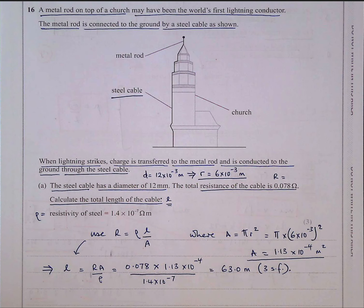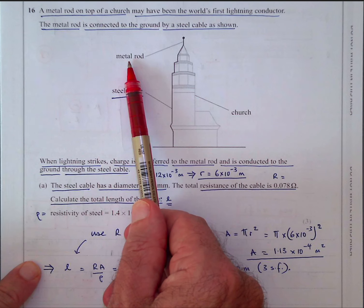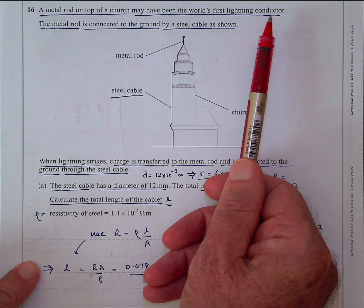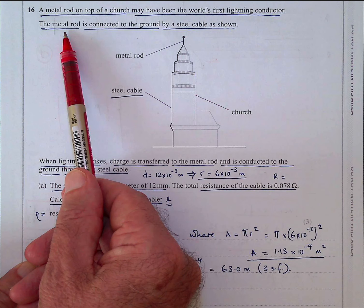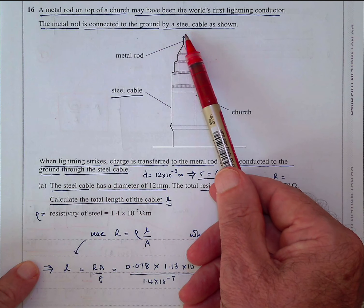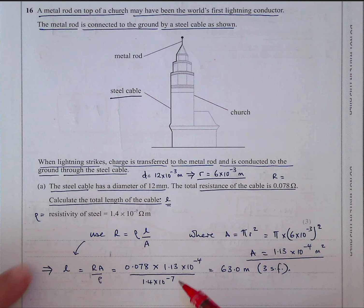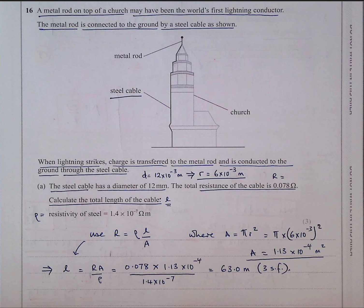Here's question 16. It's got a metal rod on top of a church — may have been the world's first lightning conductor. A lightning conductor is a conductor which allows any electricity to discharge through to the ground by a steel cable. They basically want you to work out the length of the steel cable and they're giving you some information.